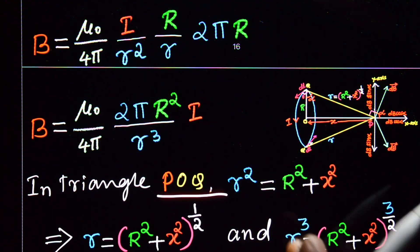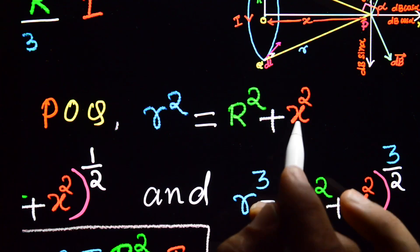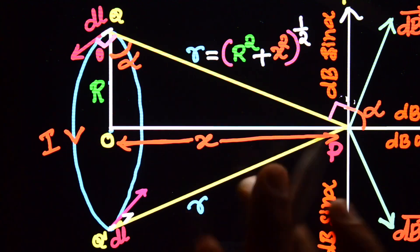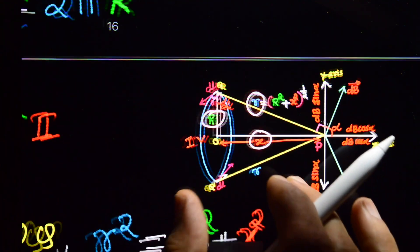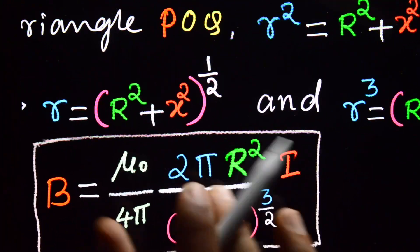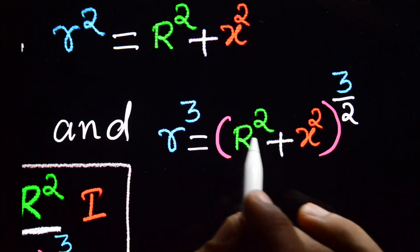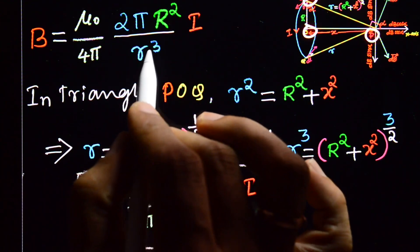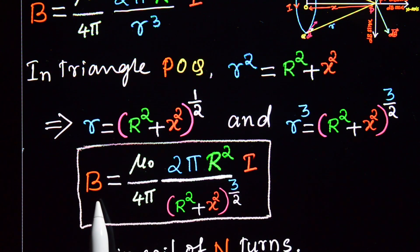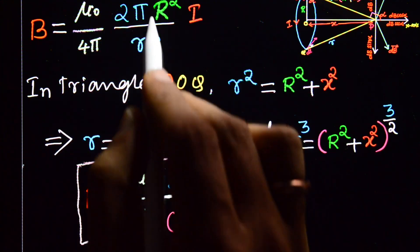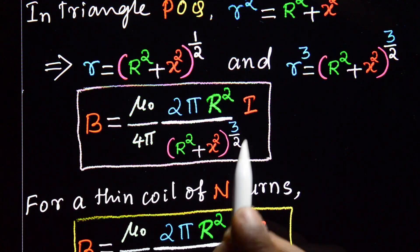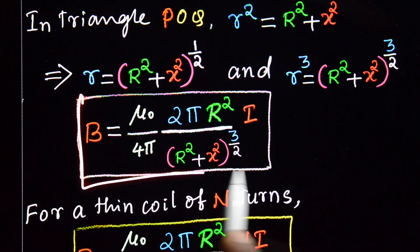From triangle POQ, by Pythagoras theorem, r² = R² + X², so r = √(R² + X²) and r³ = (R² + X²)^(3/2). Substituting, the magnetic field at point P is B = (μ₀/4π) × (2πR²) / (R² + X²)^(3/2) × I. This is the required expression for magnetic field due to a current-carrying circular loop.